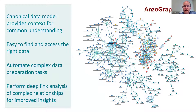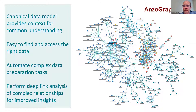AnzoGraphDB provides the ability to create this canonical data model to have a better understanding of the overall data, as all of the data is in a single place to make it easier to find and access the right data, automate complex data preparation tasks, and perform deep link analysis of complex relationships for improved insights.